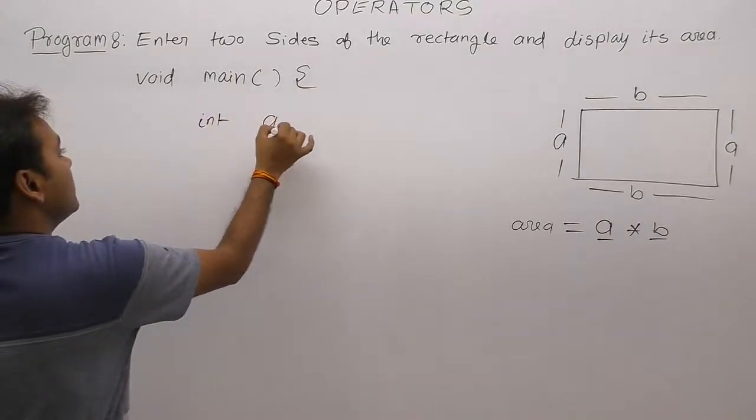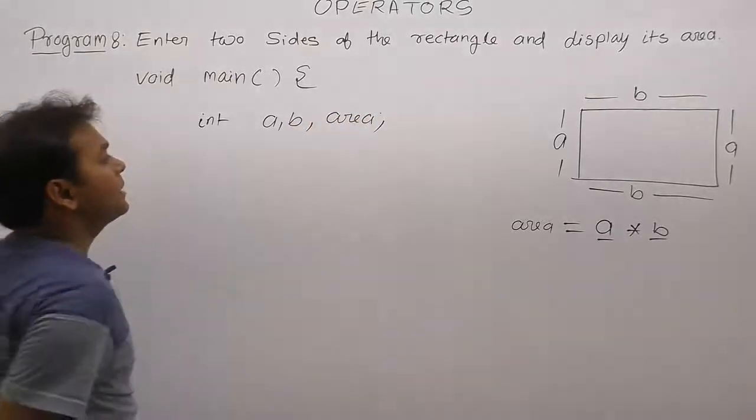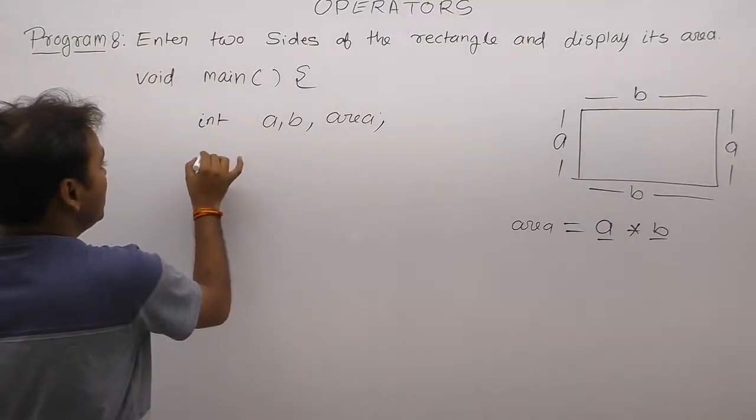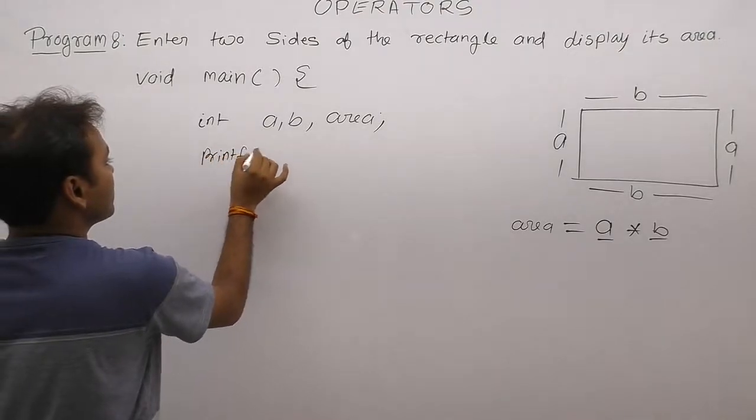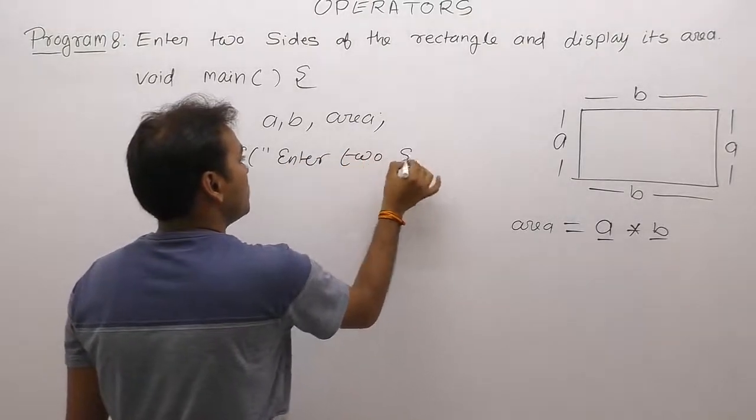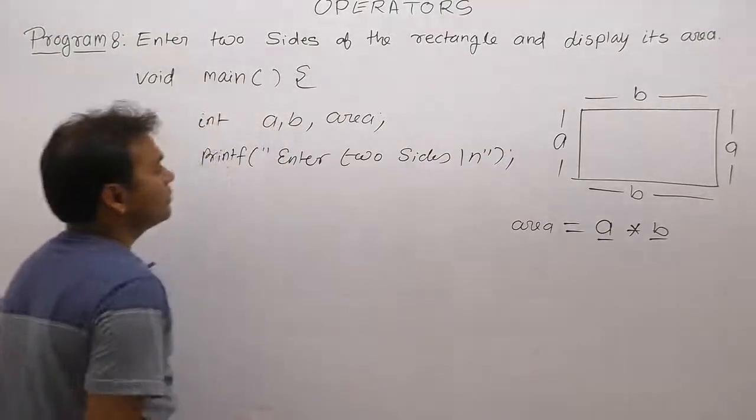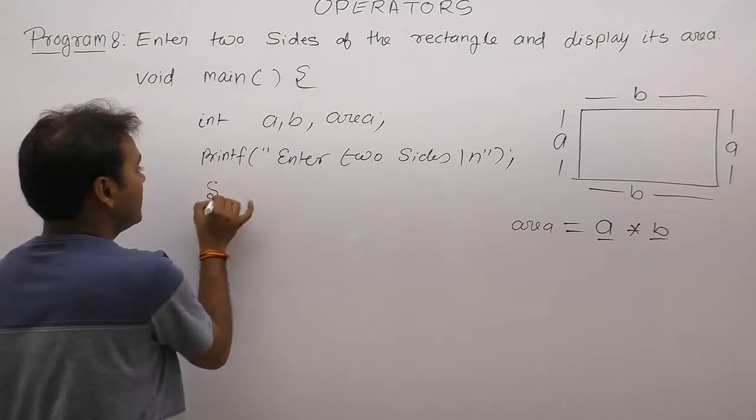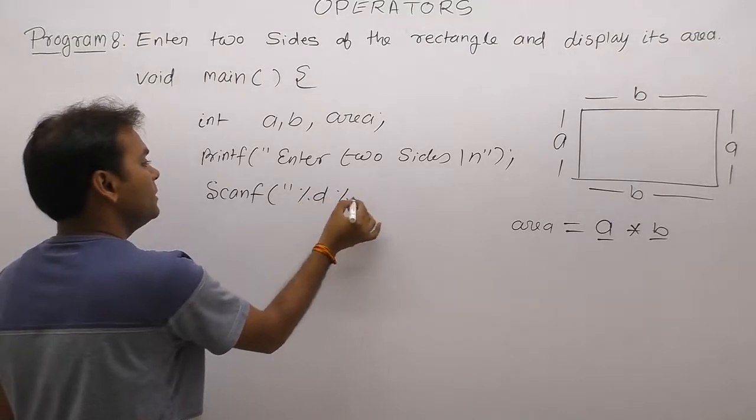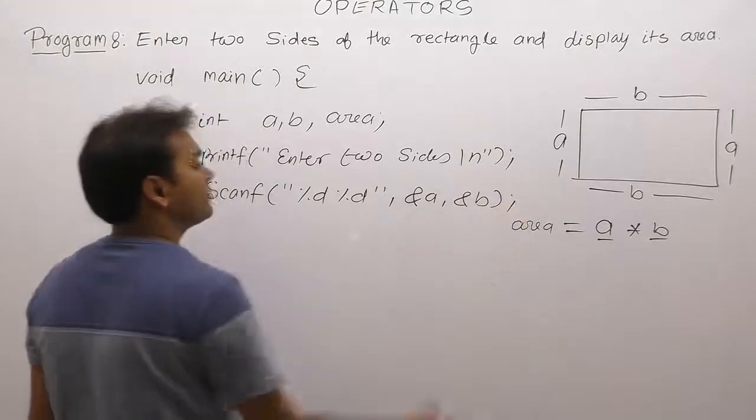Integer. There are three variables are required. Then again printf or scanf entering two sides. Printf. Enter two sides. Enter two sides of rectangle. Next one. How to calculating its area. Sorry, before that. Before that, reading inputs. How many inputs are required. There are two inputs. A and B. Therefore. Scanf. Address of A comma address of B.